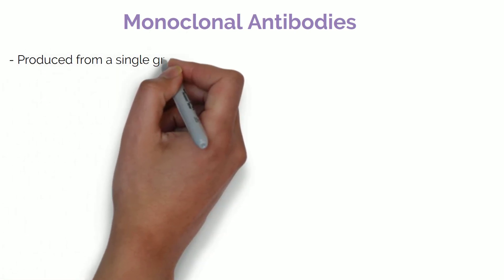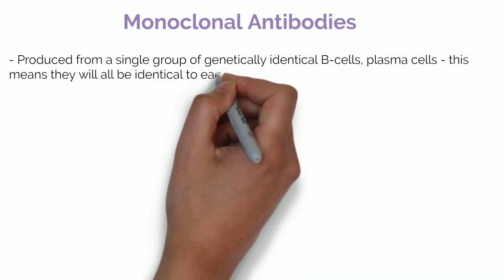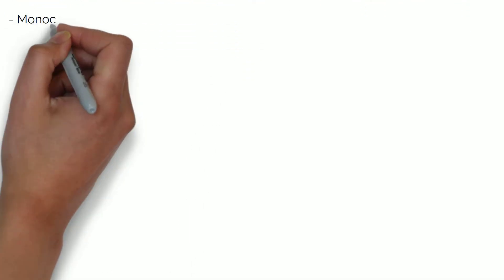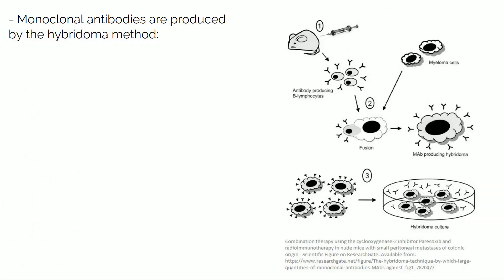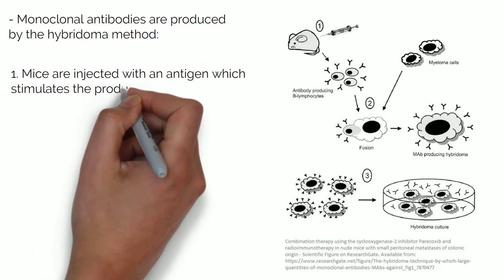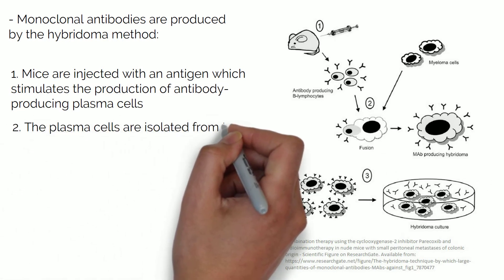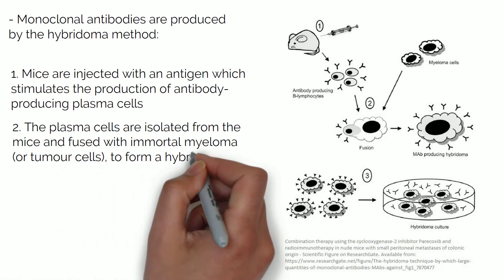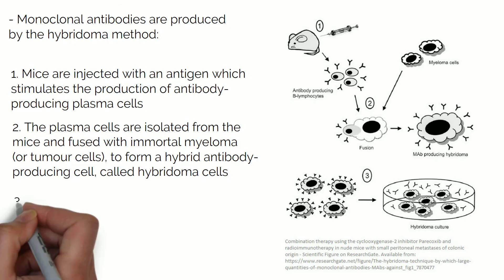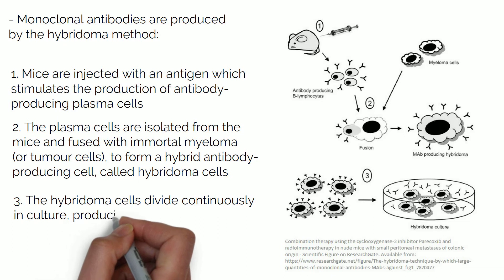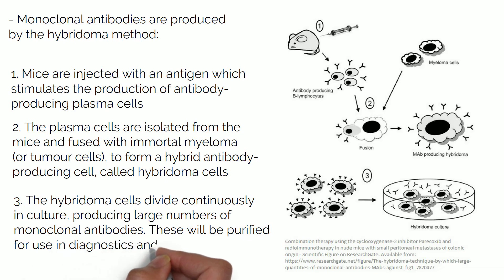Monoclonal antibodies are produced from a single group of genetically identical B-cells or plasma cells, meaning they will all be identical to each other. They are produced in the lab by the hybridoma method. First, mice are injected with an antigen, which stimulates the production of antibody-producing plasma cells. The plasma cells are isolated from the mice and fused with immortal myeloma or tumour cells to form hybrid antibody-producing cells called hybridoma cells. The hybridoma cells divide continuously in culture, producing large numbers of monoclonal antibodies, which are then purified for use in diagnostics and therapeutics.